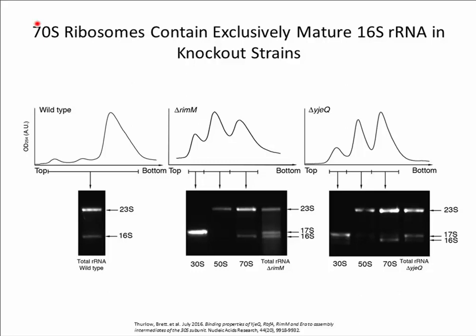After utilizing an in vitro approach, we next wanted to assess maturation in vivo by tracking 16S RNA maturation. We first assessed the distribution of RNA in the various strains to determine if monitoring progression of 17S to 16S RNA would be a suitable parameter for maturation. We isolated total cellular RNA as well as RNA from the 30S, 50S, and 70S peaks, ran the RNA on an agarose gel, and assessed the distribution of mature 16S and immature 17S RNA. The 70S ribosomes in the knockout strains contain almost exclusively mature 16S RNA. Therefore, we can use the ratio of 17S to 16S RNA as a proxy to assess maturation of 30S subunits.